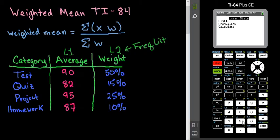To do that, you just hit 2nd and the number 2. And then you go down to calculate and hit enter.